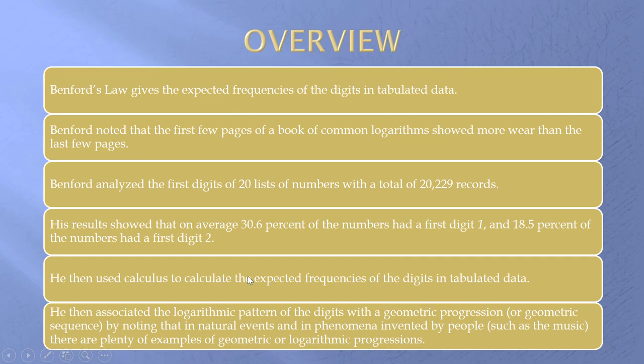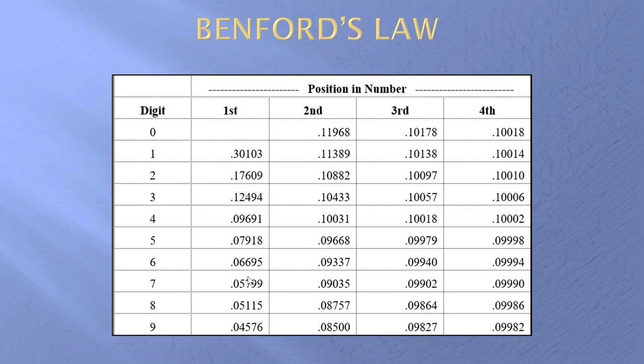His final result looked something like this in the first position. So the year is 2020 and the first digit is a two. In the first position I expect the one to be the first digit 30.1 percent of the time, I expect the two to be the first digit 17.6 percent of the time, and I expect the nine to be the first digit in only about 4.6 percent of the time.